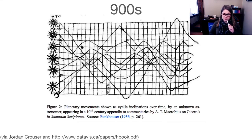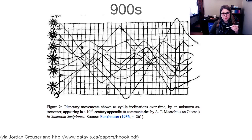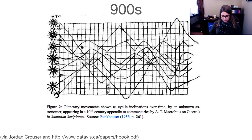Let's jump forward some thousands of years into the 900s. This is one of the first kind of official versions of data visualization that most people agree on. It shows the way that the planets move over time, the kind of cyclical movement. So it's a time series plot with a legend labeled right on it, showing the movement of the planets.